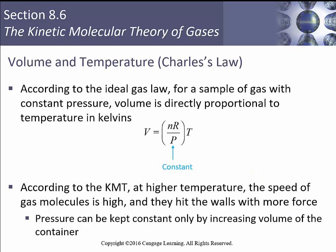Volume and temperature — Charles' Law. According to the ideal gas law, for a sample of gas with constant pressure, volume is directly proportional to temperature in Kelvins. Our volume is NR over P times T, with those values rolled together as a constant. According to kinetic molecular theory, at higher temperature the speed of the molecules is higher, they hit the walls with more force, and the pressure can be kept constant only by increasing the volume of the container.